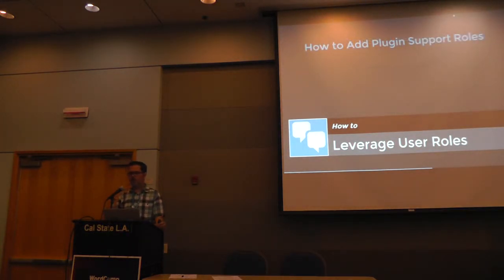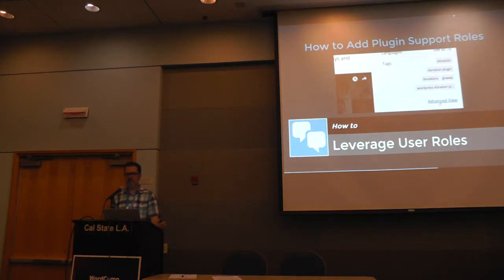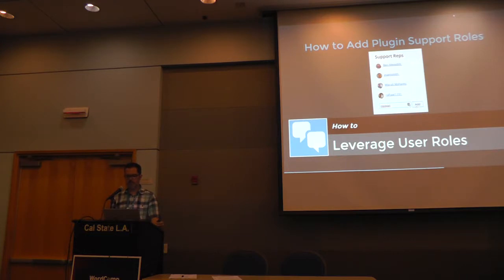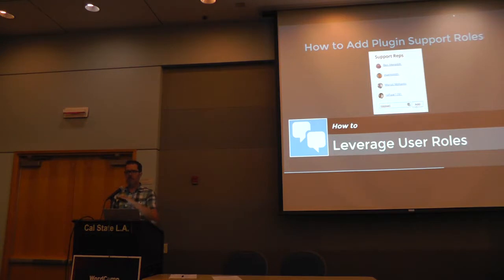So how do you add plugin support roles? It's pretty straightforward, but it's in something called the advanced view. On your plugin or theme, you have all the tabs across the top, and in the right-hand sidebar there's a little tiny link that says 'advanced view.' Click on it, and you're going to see the authors, the contributors, and now there's also a section called 'support reps.' All you do is put their WordPress.org handle into that box and click add, and they get added whether they like it or not.